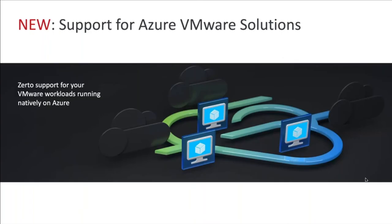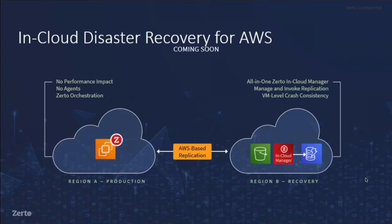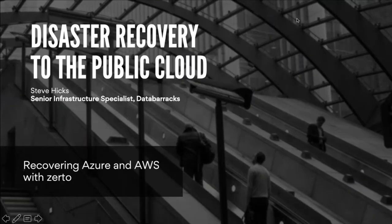We support the Azure VMware Solution — so if you want to move to public cloud but don't yet have the skill set to run native Azure, you can run VMware on Azure. And coming soon — in private preview later this year — we'll have in-cloud disaster recovery for AWS, meaning if you've got EC2 instances running in a production region in AWS, we'll be able to replicate those into another region. This is built for scale: thousands of VMs, terabytes of data — the enterprise-level replication solution that Zerto is known for.